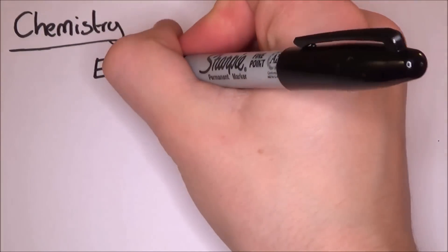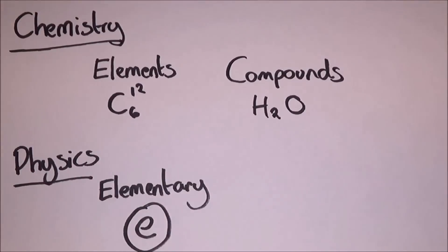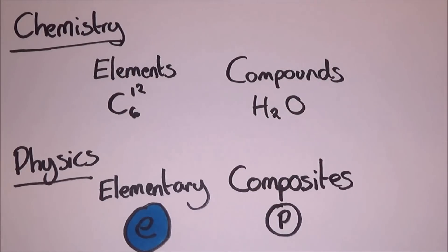So like chemistry, we have elements and we have compounds. In particle physics, we have elementary particles, electrons and quarks, and composite particles like protons and neutrons.